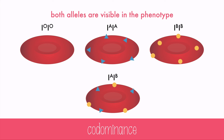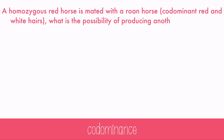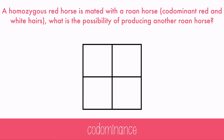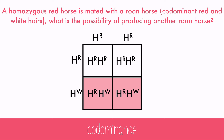Codominance can also happen in the fur of many animals, where two hair colors will show up, sometimes in patches. Let's try a case of animal fur. A homozygous red horse is mated with a roan horse — codominant red and white hairs. What is the possibility of producing another roan horse? I'll use the letter H for hair, R for red, and W for white. Both the red and white alleles get capital letters because neither can truly dominate the other. Crossing the red horse and the roan horse gives us 50-50 homozygous red and heterozygous roan — a 50% chance the horse will be roan.